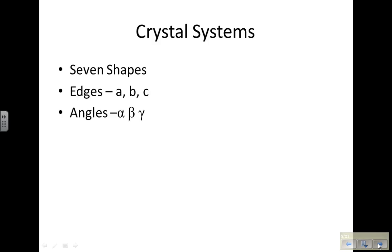There are seven shapes that I'd like you to know for our basic crystal systems. We're going to designate the edges A, B, and C, and the angles alpha, beta, and gamma. This is just meant to be a basic introduction to crystal systems.